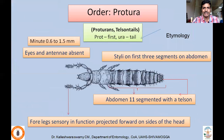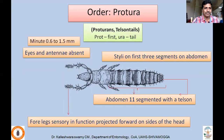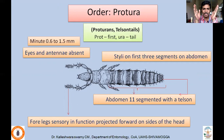We'll start with order Protura. They are commonly called proturans or telsontails. Etymologically, Protura is derived from the Greek words 'pro' or 'prot' meaning first, and 'ura' meaning tail-like structure. They are very small, minute insects — 0.6 to 1.5 mm in length. Eyes and antennae of these proturans are absent, and that sensory function is taken over by the forelegs which are projected forward on the sides of the head.